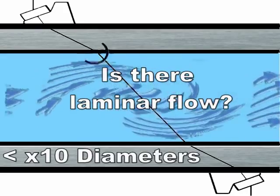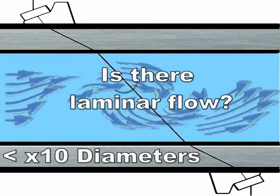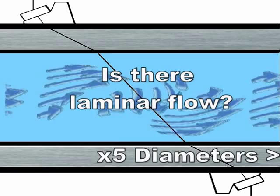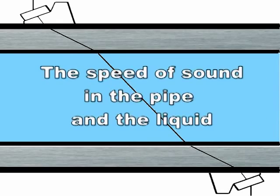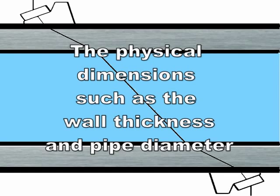Typically, you'll have laminar flow when you have 10 diameters upstream and 5 diameters downstream from the flow meter clear of any obstructions. We need to know the speed of sound in the pipe and the liquid for the refraction angle calculation, and the physical dimensions such as wall thickness and pipe diameter.